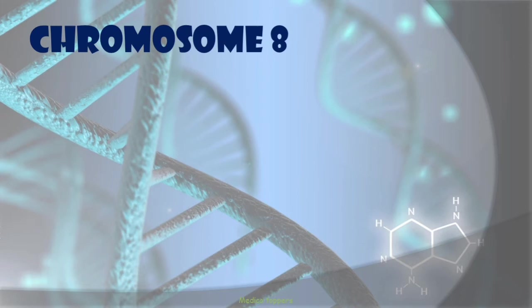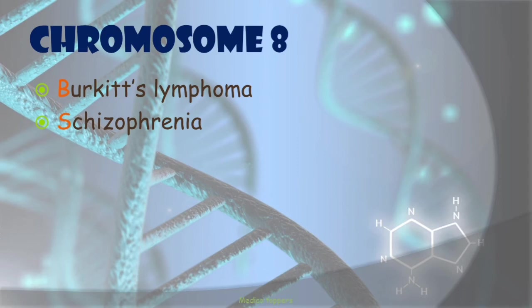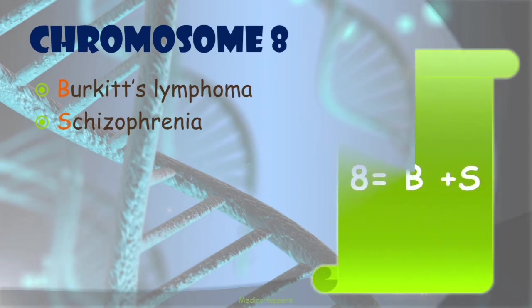Then comes chromosome 8. The diseases are Burkitt's lymphoma and schizophrenia. The mnemonic 'Bob gets lymphoma and schizophrenia' is admittedly one of the weaker ones — you can find similarity between the letters B, A, and S.